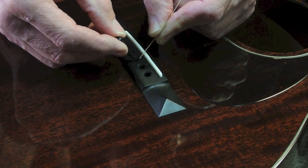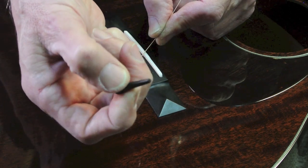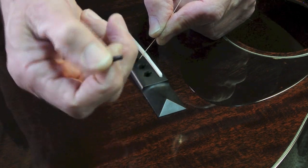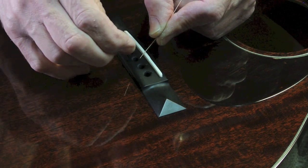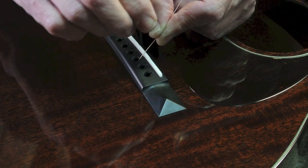I'm going to put the bridge pin in. This is a non-slotted bridge pin, so it really doesn't matter what angle I put it in on. If it was slotted, of course, the slot should go where the string is.